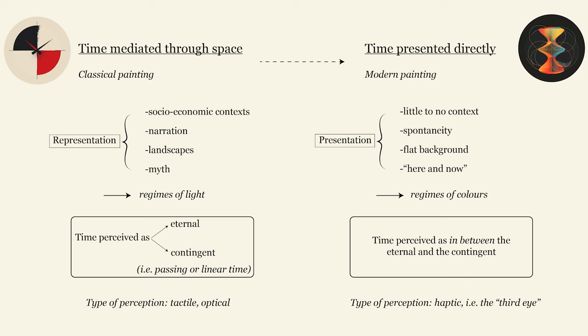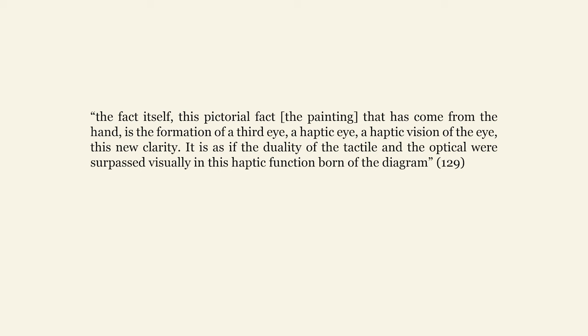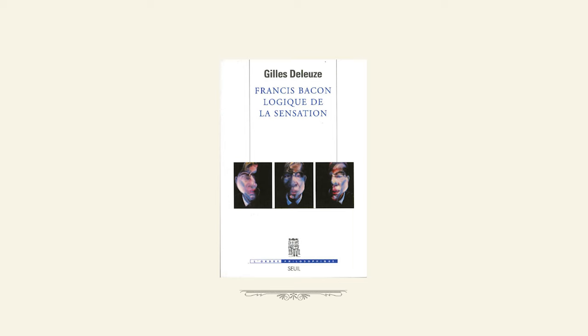The pictorial discoveries made by modern painters such as Cézanne, Van Gogh, or Francis Bacon aim to show this new in-betweenness of time, which Deleuze calls the third eye. Here are the last two sentences of the Logic of Sensation: the pictorial fact — that is what we see on the canvas, that has come from the hand — is the formation of a third eye, a haptic eye, a haptic vision of the eye, this new clarity. It is as if the duality of the tactile and the optical were surpassed visually in this haptic function born of the diagram. In this video and the next, we're going to see how Deleuze formulates his logic of sensation.